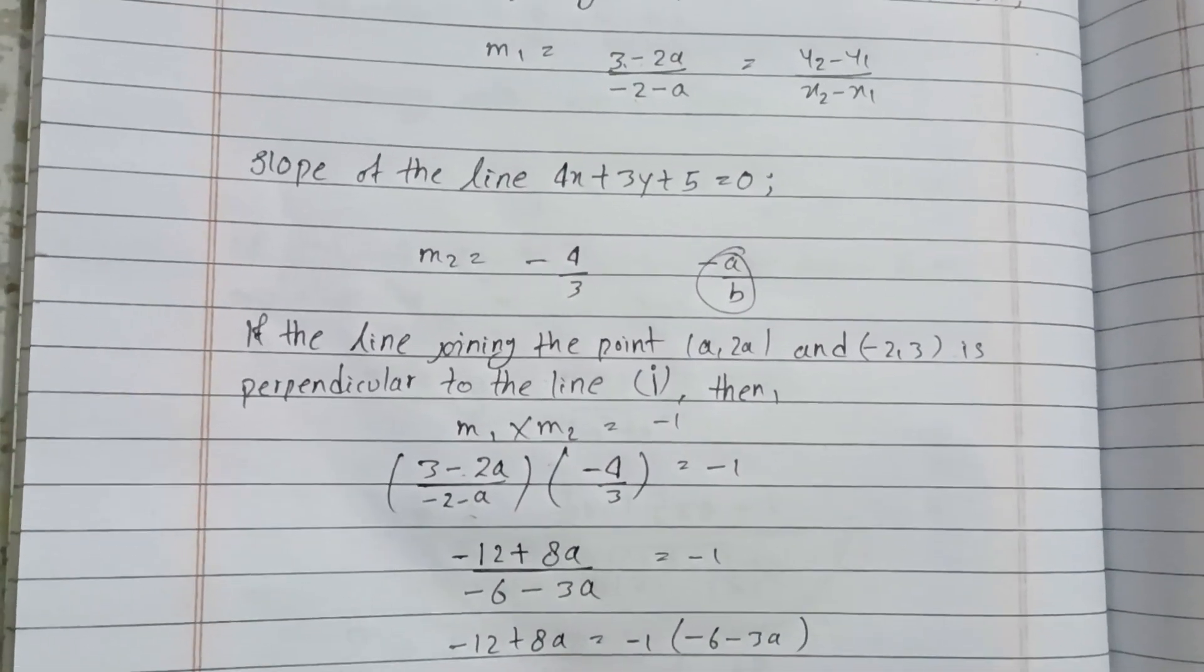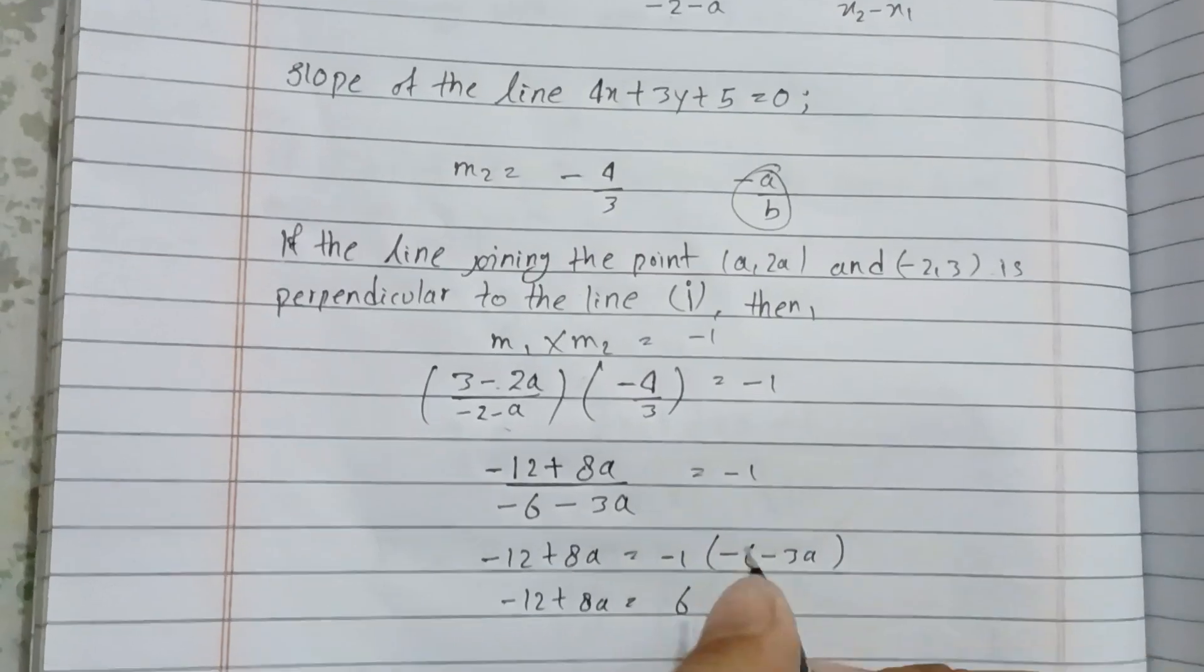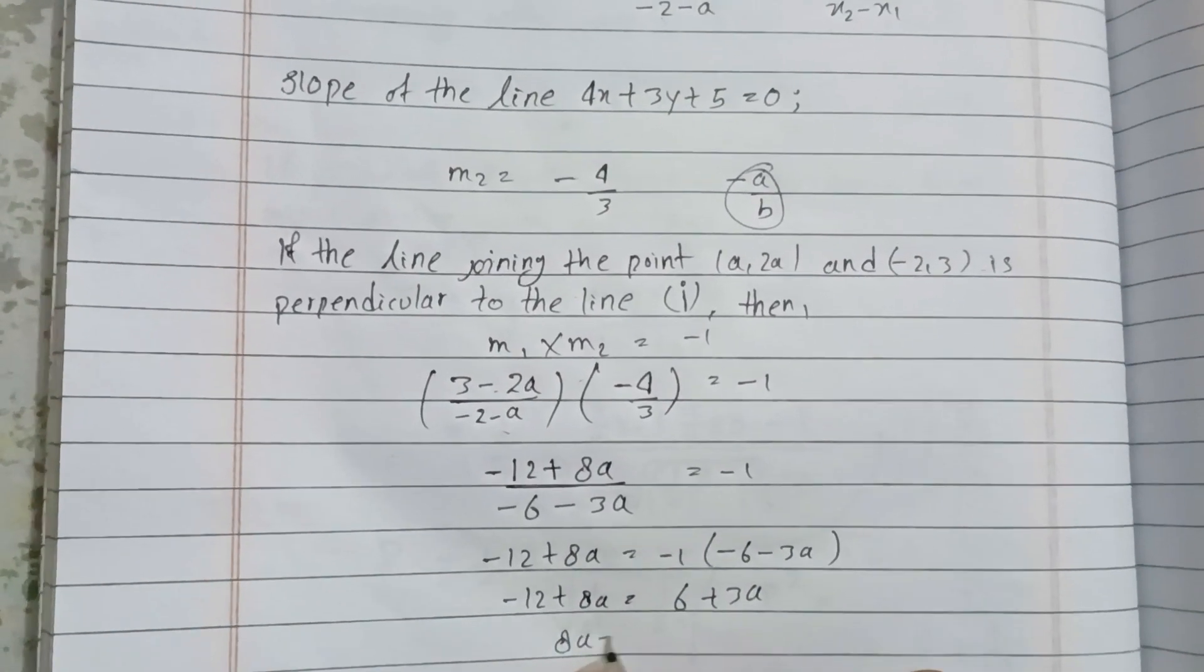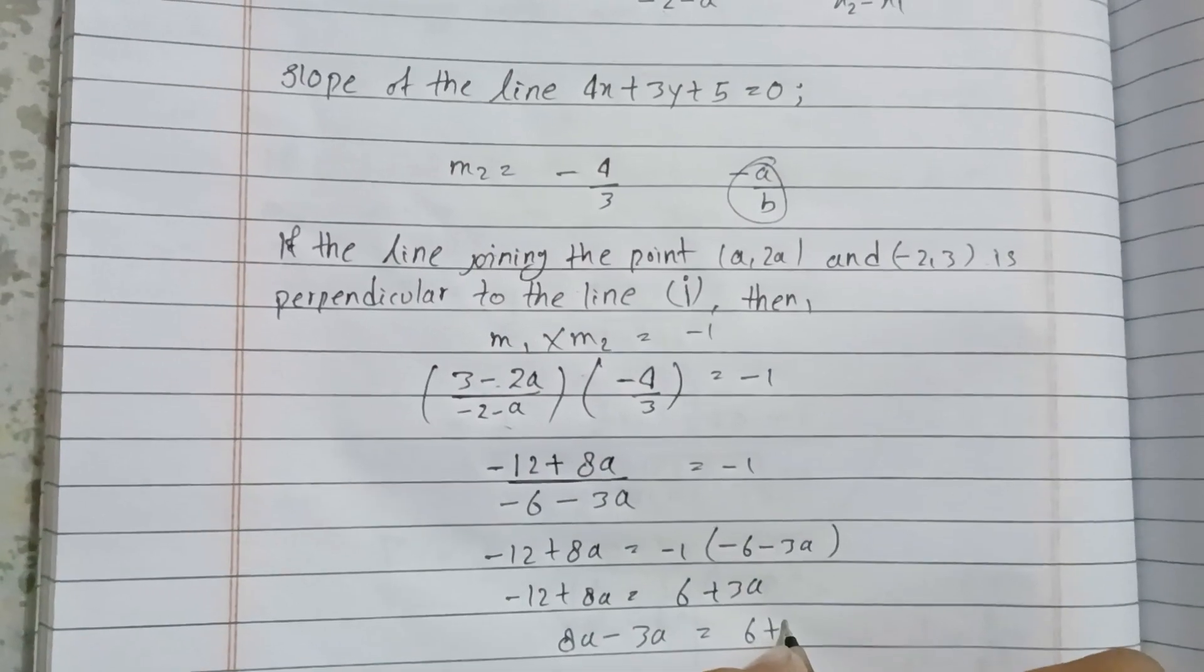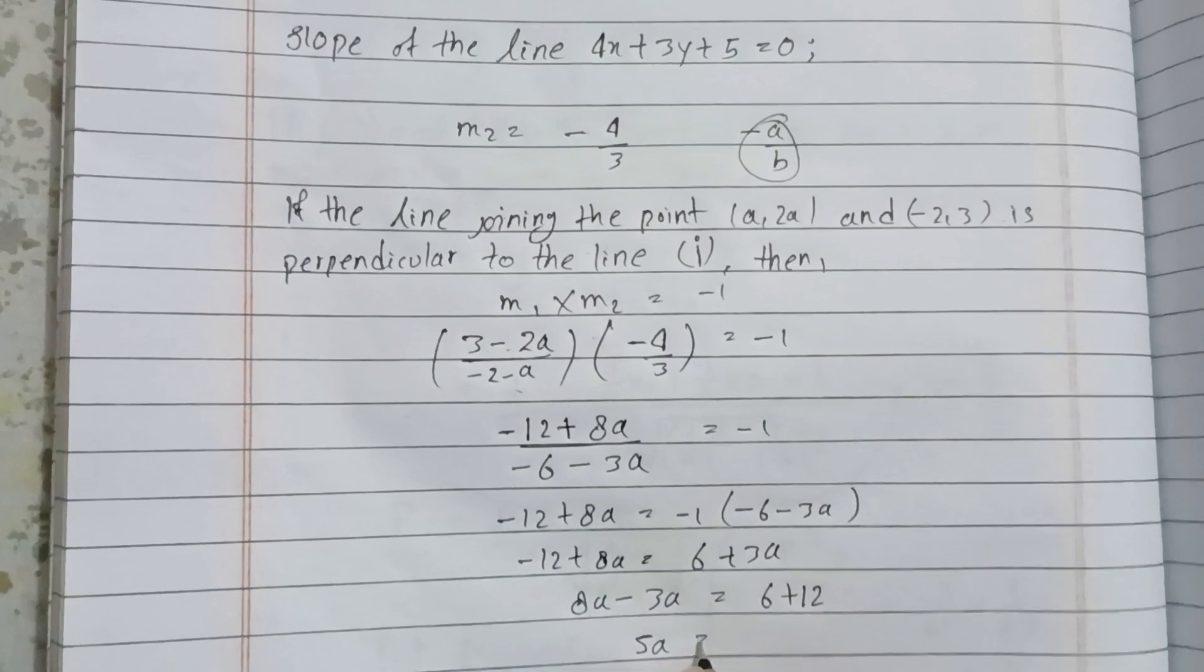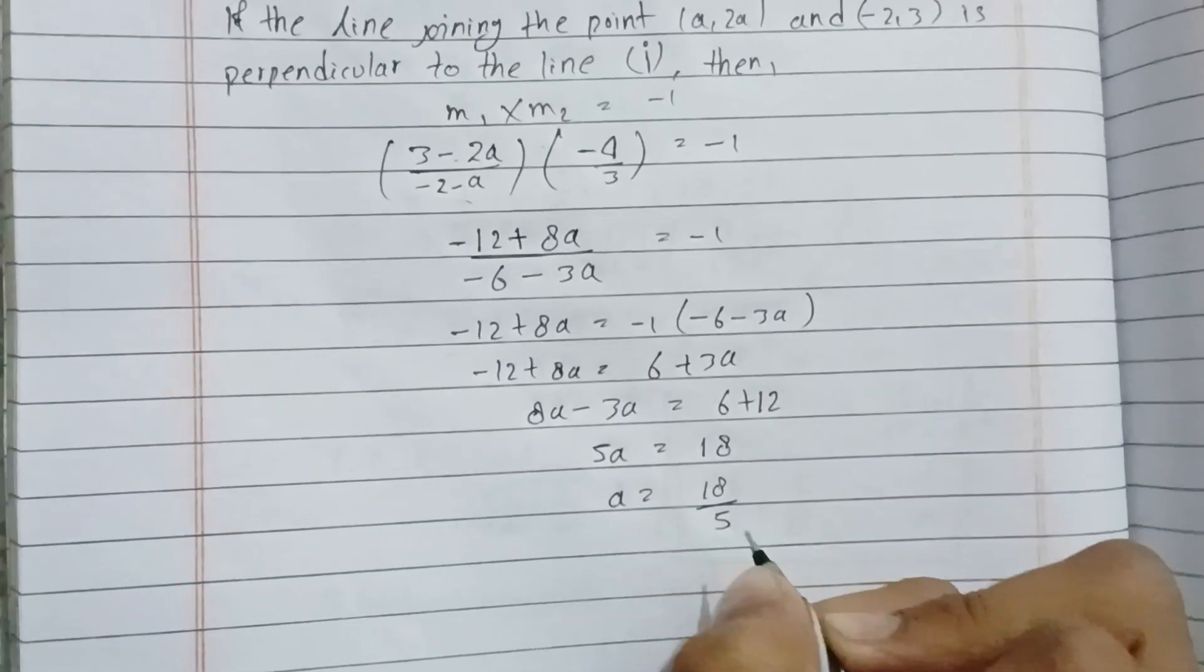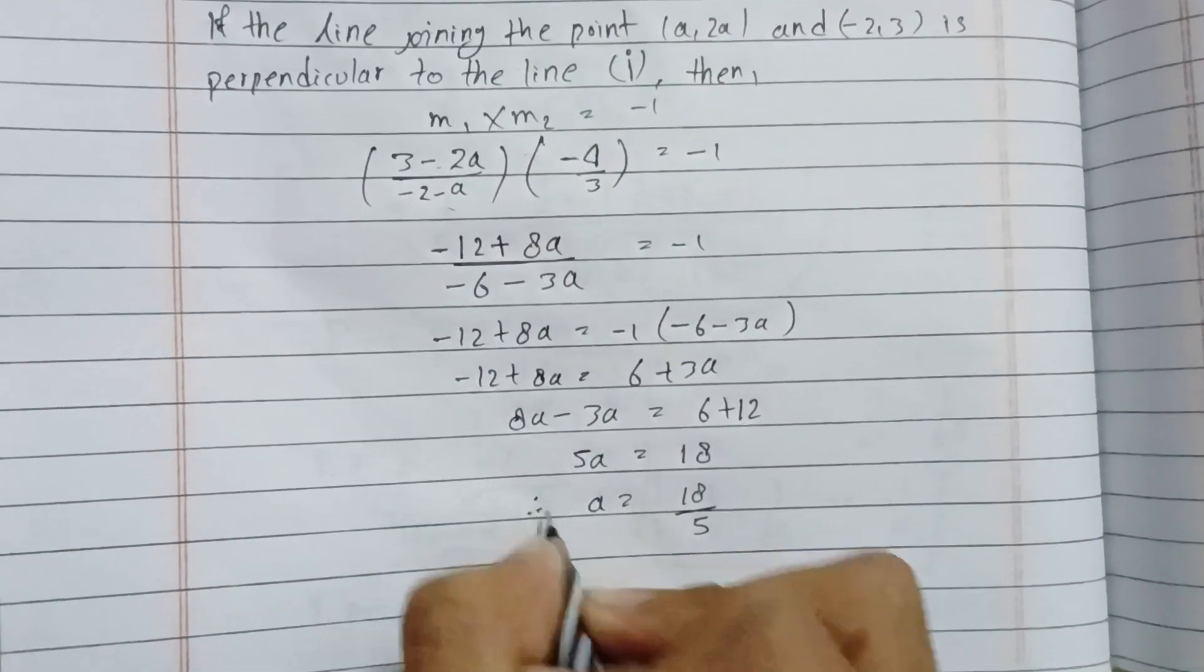So 8a - 3a equals 6 + 12. That gives us 5a equals 18. Therefore a equals 18/5.